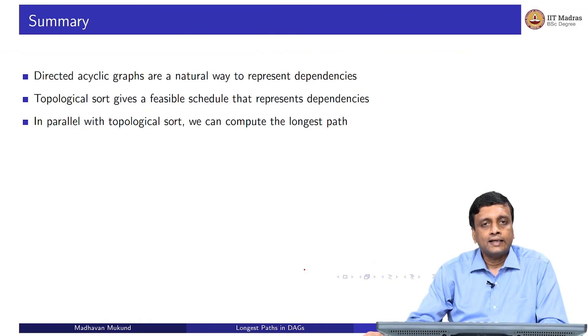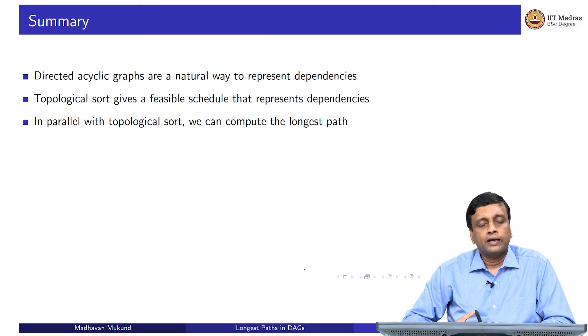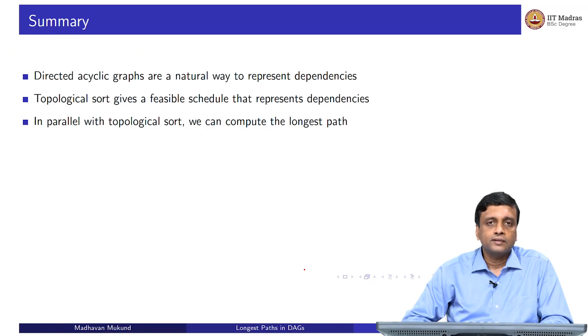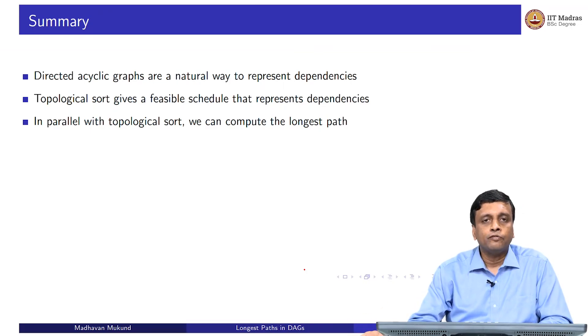Basically with directed acyclic graphs, now we can do both these things very efficiently. We can get the feasible schedule with topological sort. And while we are doing the topological sort, we can also compute through the dependencies, the longest path, that is the minimum time. The longest path is really telling me the minimum time it will take me to finish all the tasks according to the dependencies.